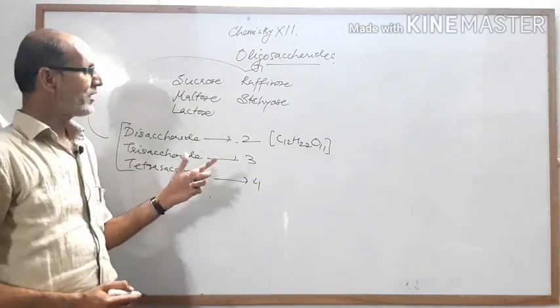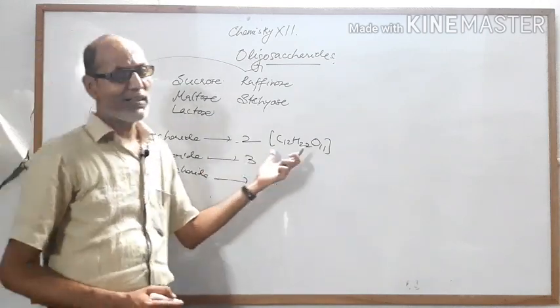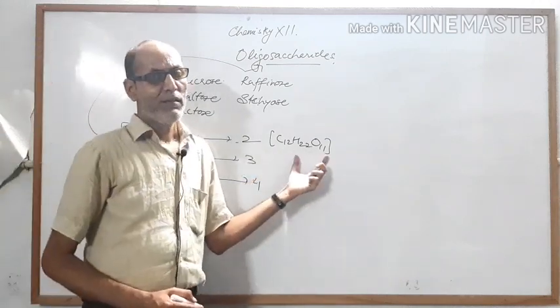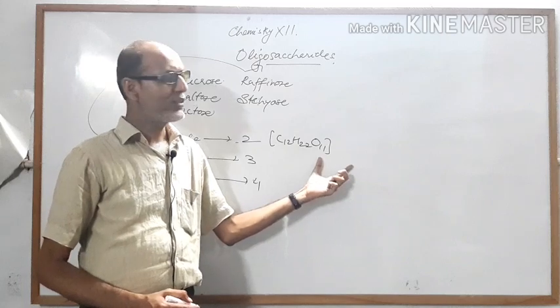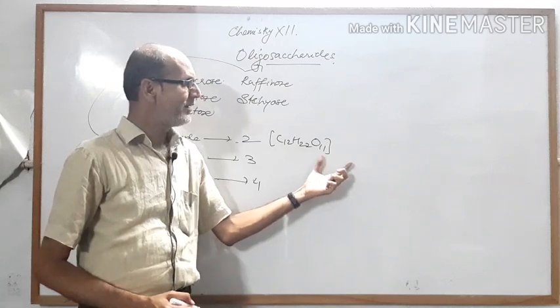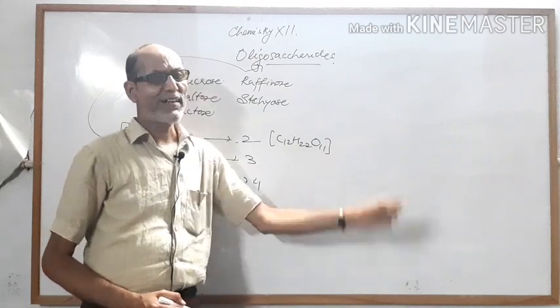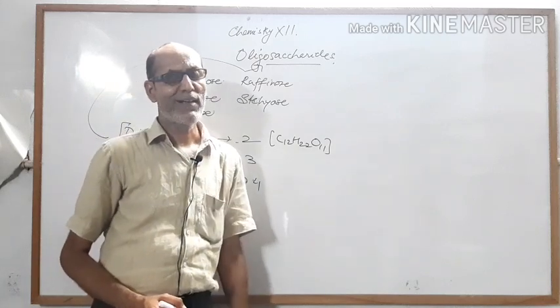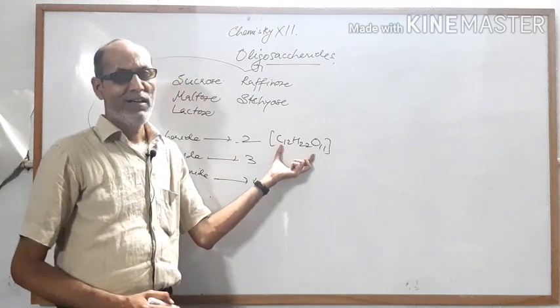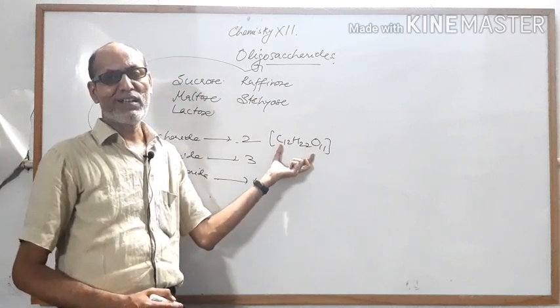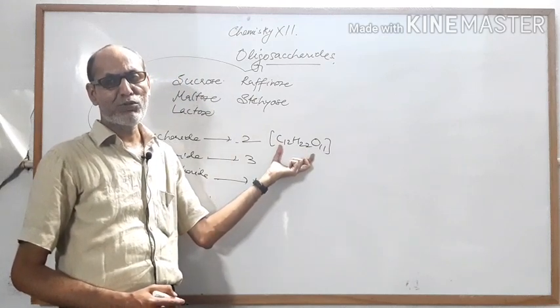The disaccharides are made from two monosaccharides, and the trisaccharide raffinose is made by joining three monosaccharides.